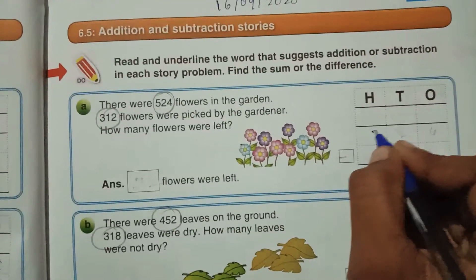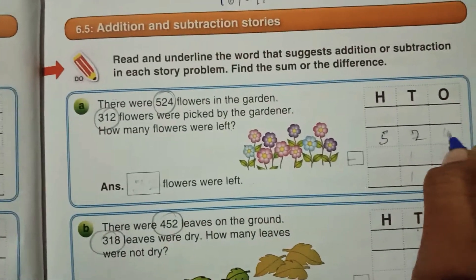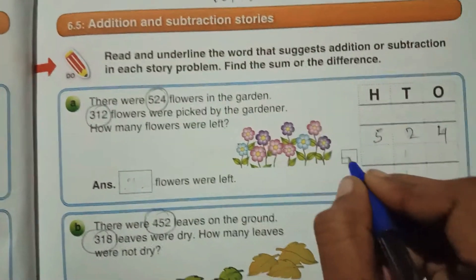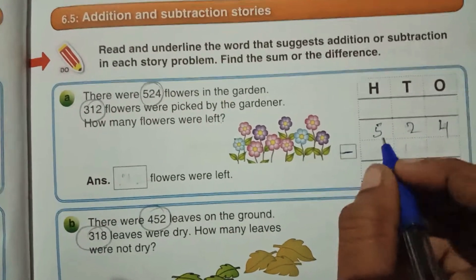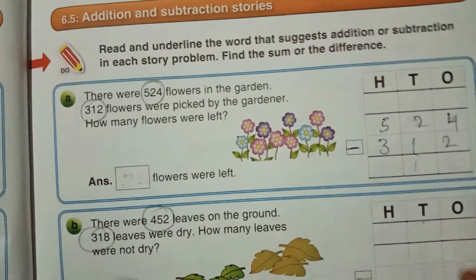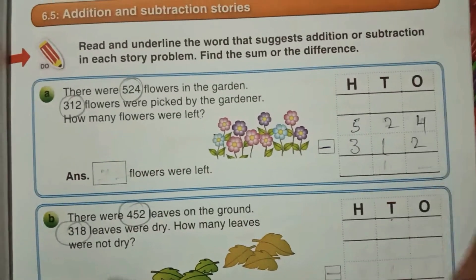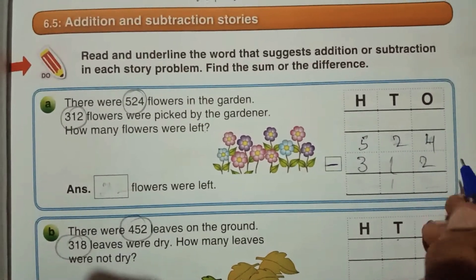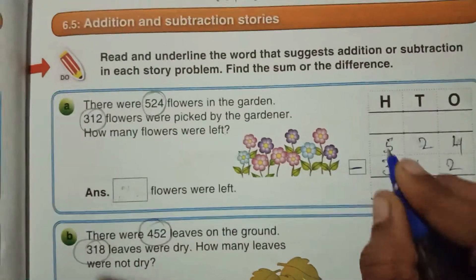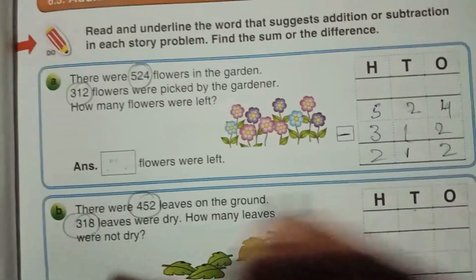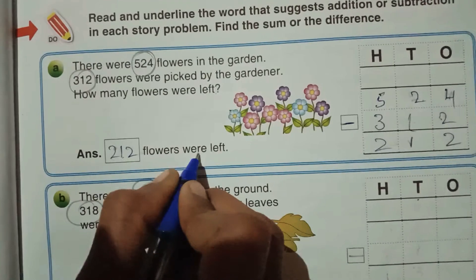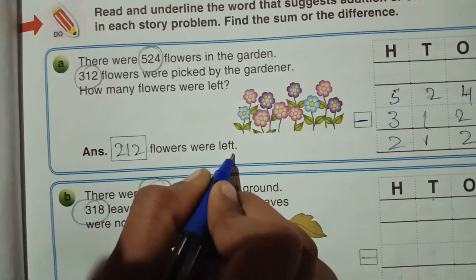Totally there are 524 flowers. Minus 312 are picked. 4 minus 2 is 2, 2 minus 1 is 1, 5 minus 3 is 2. 212 flowers were left in the garden.